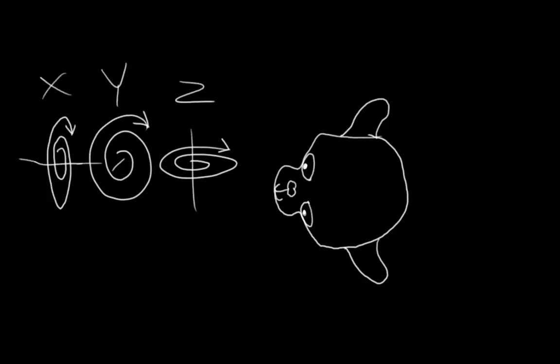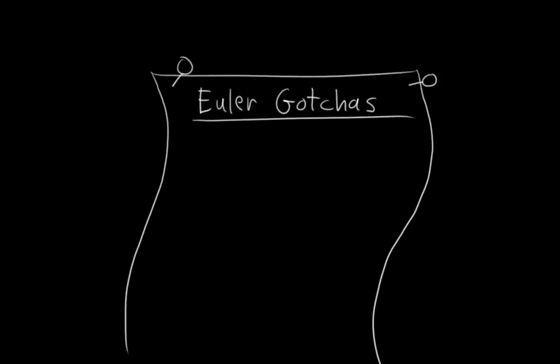However, as conceptually simple as Eulers are, in practice they have a long laundry list of gotchas. The biggest gotcha is something called gimbal lock.